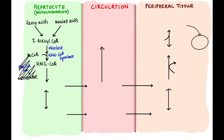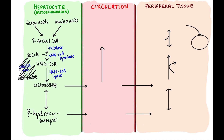Instead of HMG-CoA making cholesterol, here HMG-CoA is going to make acetoacetate. That's the next step in ketone body synthesis, and the enzyme that does that is called HMG-CoA lyase, which makes acetoacetate. Acetoacetate is the first of our ketone bodies. Another ketone body that can be made from acetoacetate is beta-hydroxybutyrate. Both are ketone bodies, and they then go into the bloodstream.